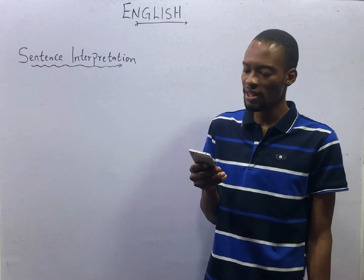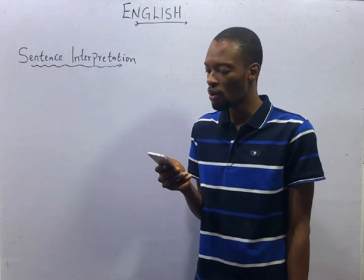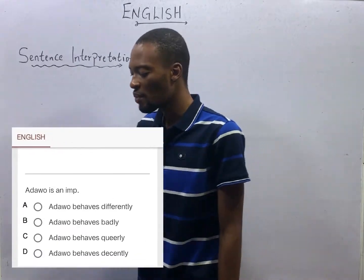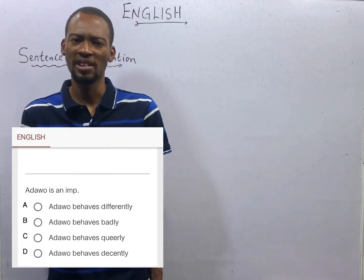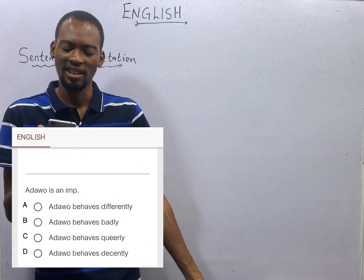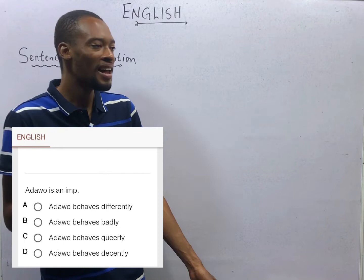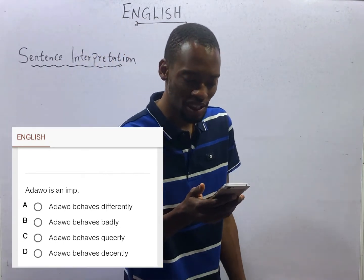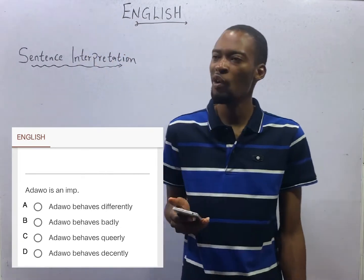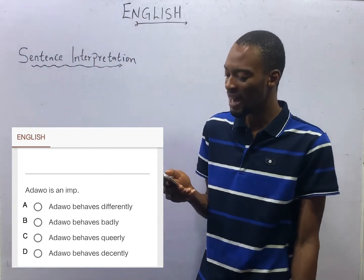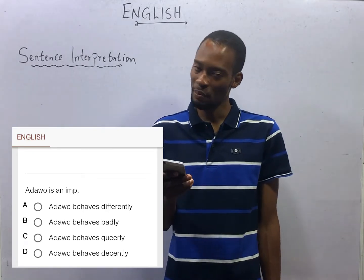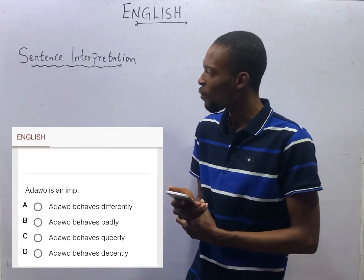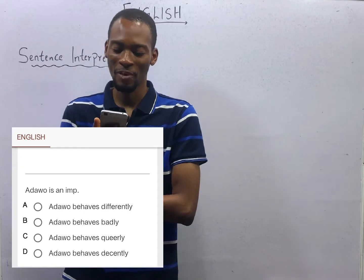'Adawo is an imp.' Imp means mischievous, mysterious, and rascal. So if Adawo is an imp, the best option should be 'Adawo behaves badly.' That is the best interpretation for 'Adawo is an imp.'